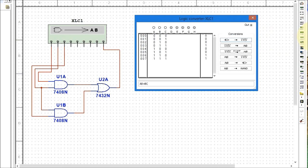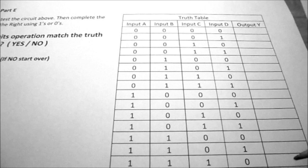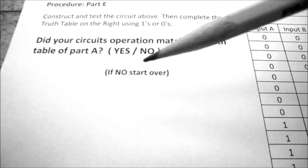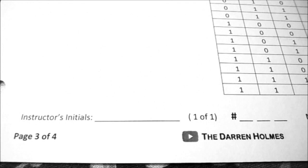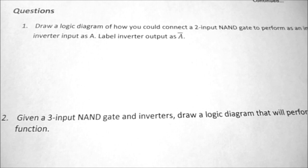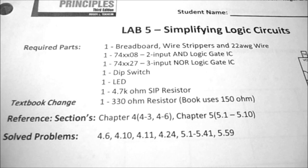Now we're going to go back and finish off Lab 5. The last step is to wire up the circuit and fill in the truth table — hopefully your circuit will match the first one. If the circuit operation does not match the truth table from Part A, you'll have to start over and redo your expression. Once you've wired up the circuit and verified it is working, demonstrate it to your instructor so they can initial it to indicate completion. On the last page of the lab there are 5 questions to answer and hand in. Hints can be found in your textbook: solved problems 4.6, 10, 11, 24, and 5.1 through 41 and 59.